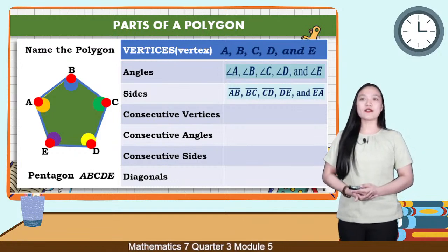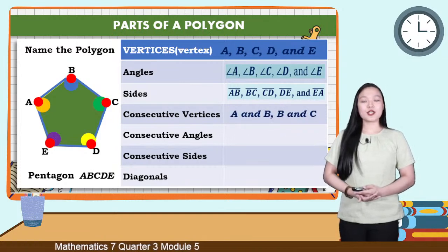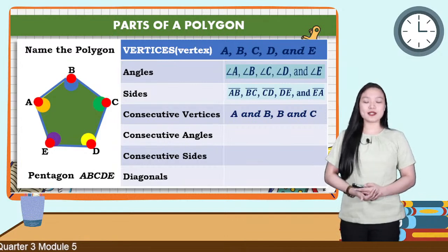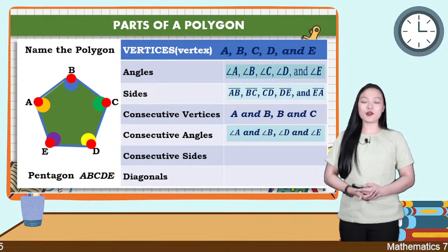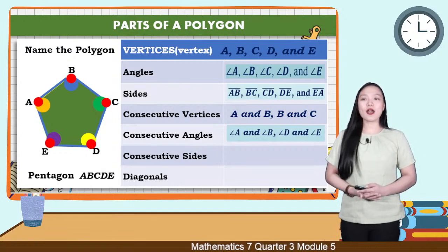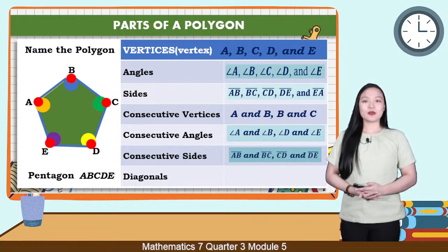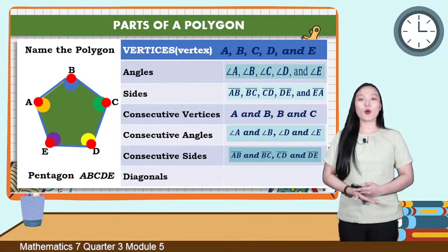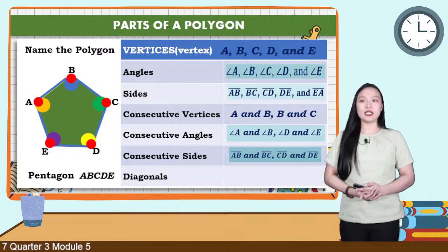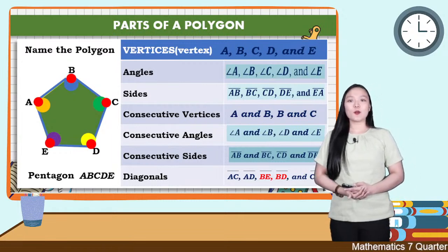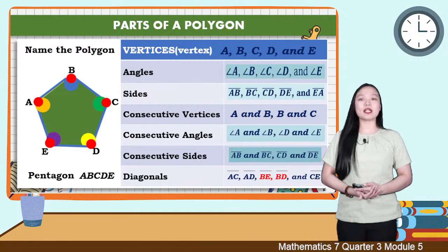We also have consecutive vertices — for example, A and B, and B and C. We also have consecutive angles — for example, angle A and angle B, and angle D and angle E. We also have consecutive sides — for example, line AB and line BC, and also CD and DE. We also have diagonals: AC, AD, BE, BD, and so on.